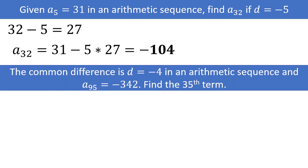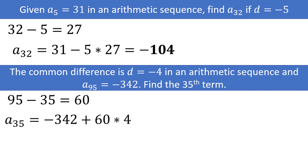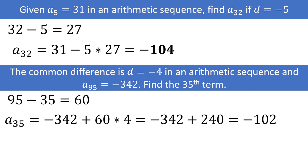What about this one, where you have a common difference of negative 4, and the 95th term a sub 95 is equal to negative 342, and we want to find the 35th term? This is a bit trickier, as we need to work backwards. The difference in subscripts is 95 minus 35, which is 60. Going backwards, we need to add 4 — not subtract — 60 times. We have a sub 35 equal to negative 342 plus 4 times 60, which is negative 342 plus 240, or negative 102. If going forwards, use the common difference; if going backwards to an earlier value, change the sign of the common difference.